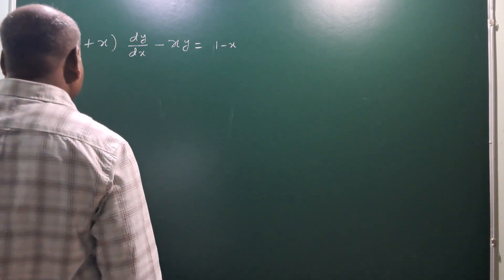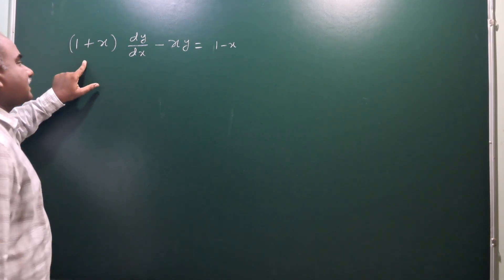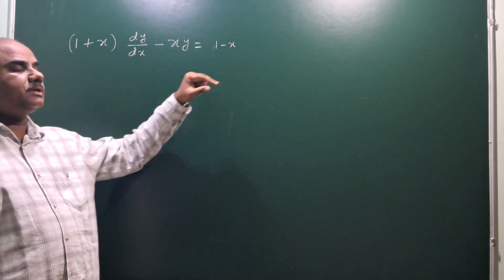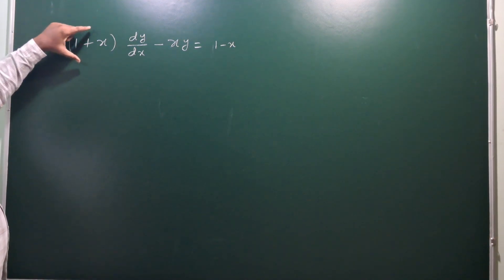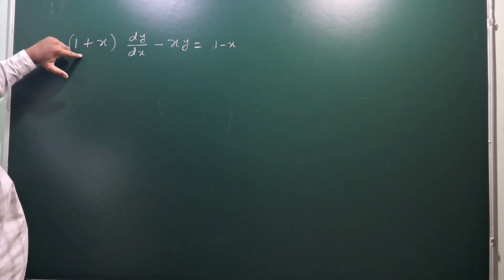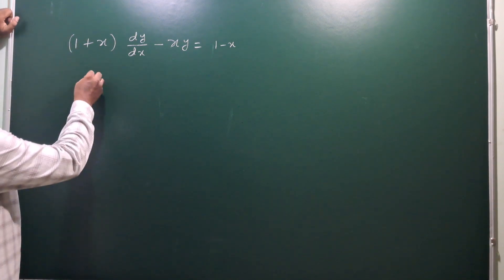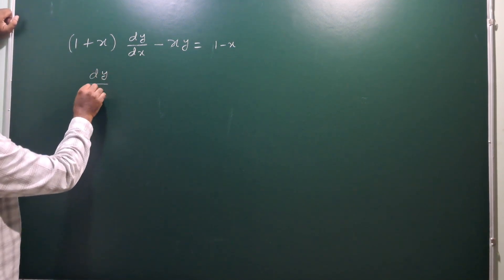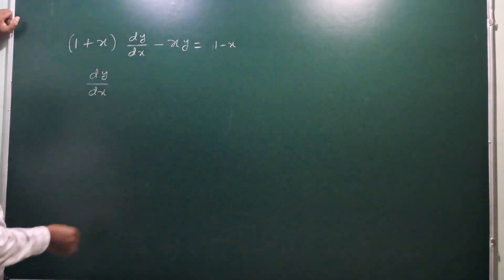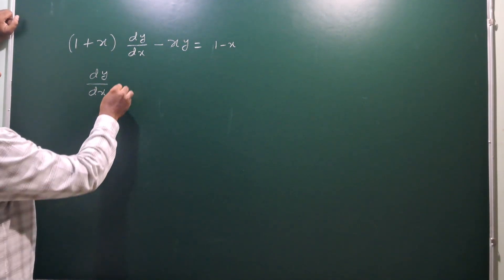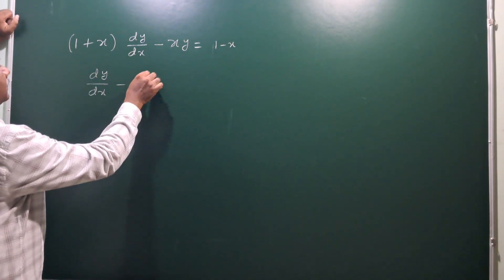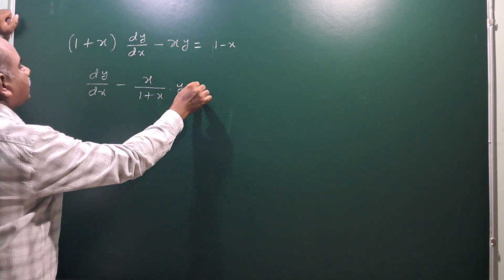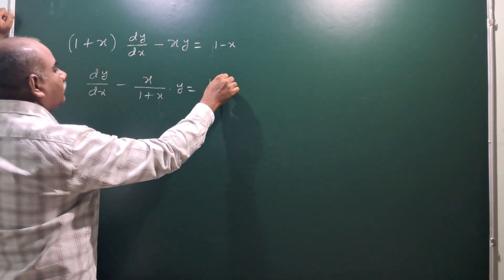Next LDE problem: 1 plus x into dy by dx minus xy is equal to 1 minus x. Dividing the entire equation with 1 plus x to get a standard form. After dividing with 1 plus x, our equation becomes dy by dx minus x by (1 plus x) into y is equal to 1 minus x by (1 plus x).